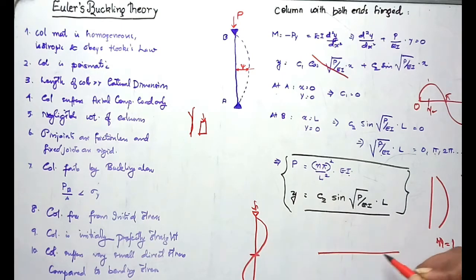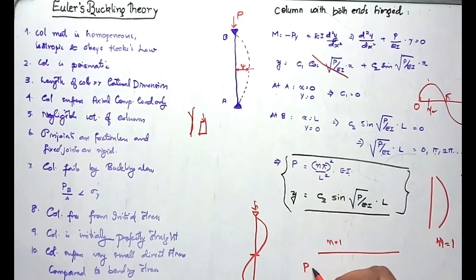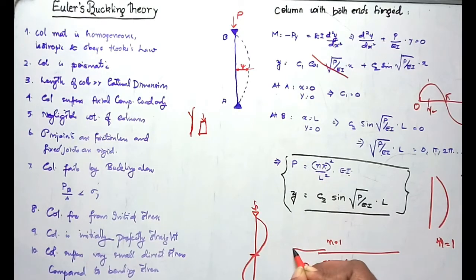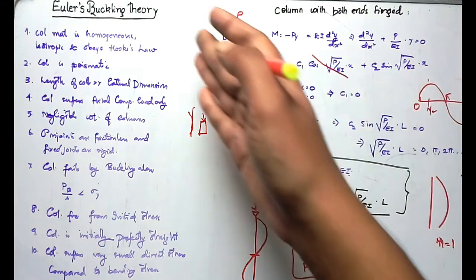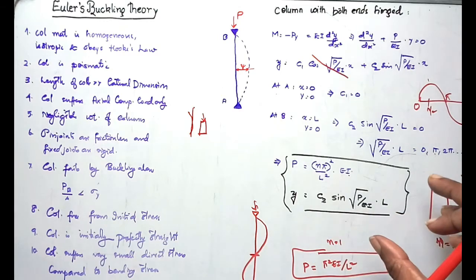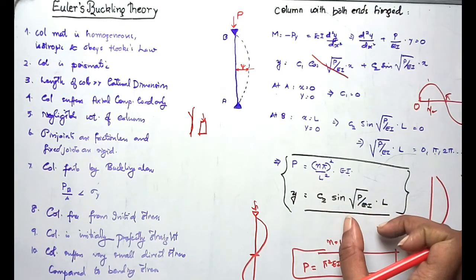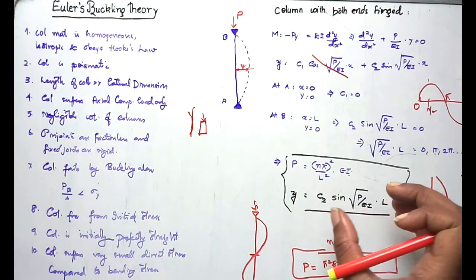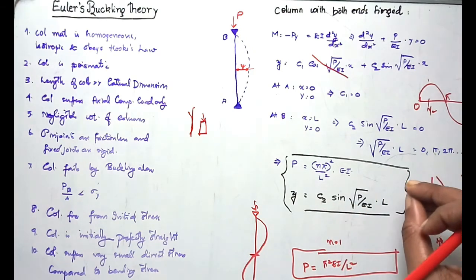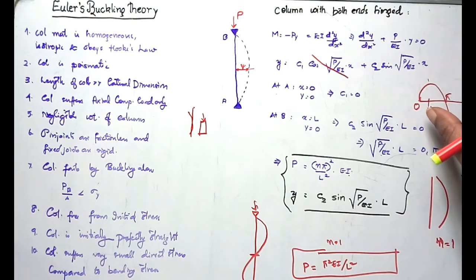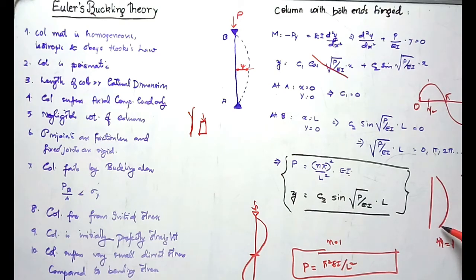Usually, we write the critical buckling load as P = π²EI/L², taking n = 1. This is for an idealized column with both ends hinged, following the basic assumptions of Euler's buckling theory. The deflection suggested by Euler's buckling theory is a sine function: n = 1 corresponds to a single half sine wave, whereas n = 2 corresponds to a complete sine wave.